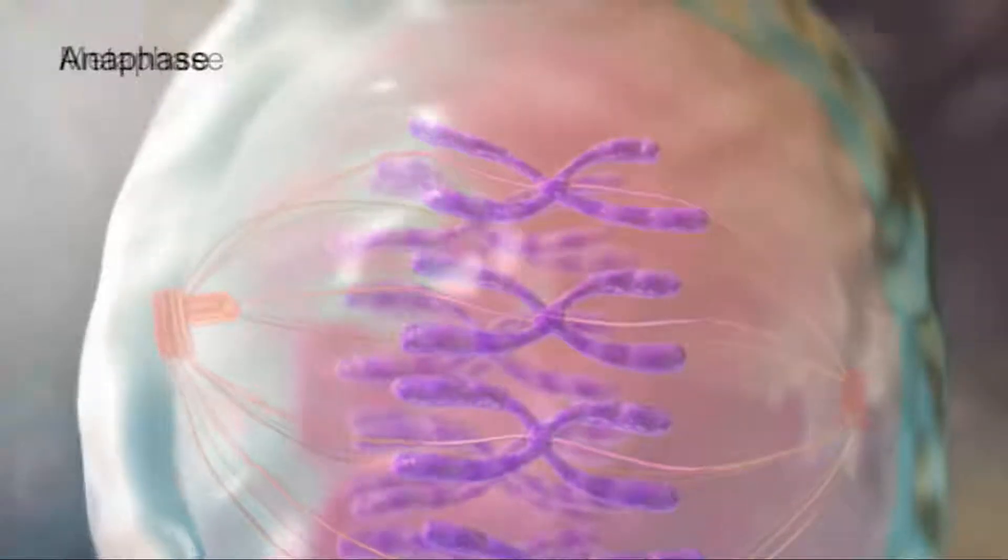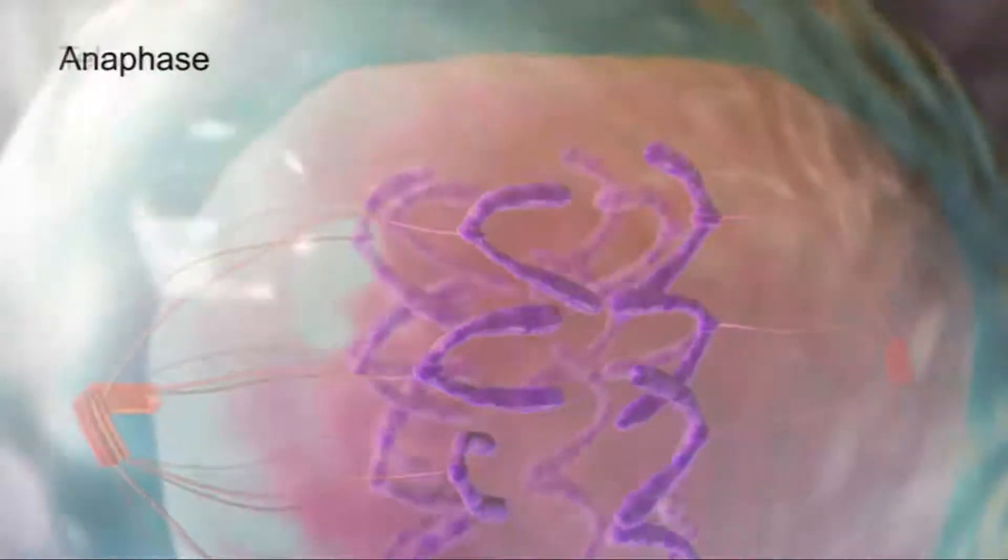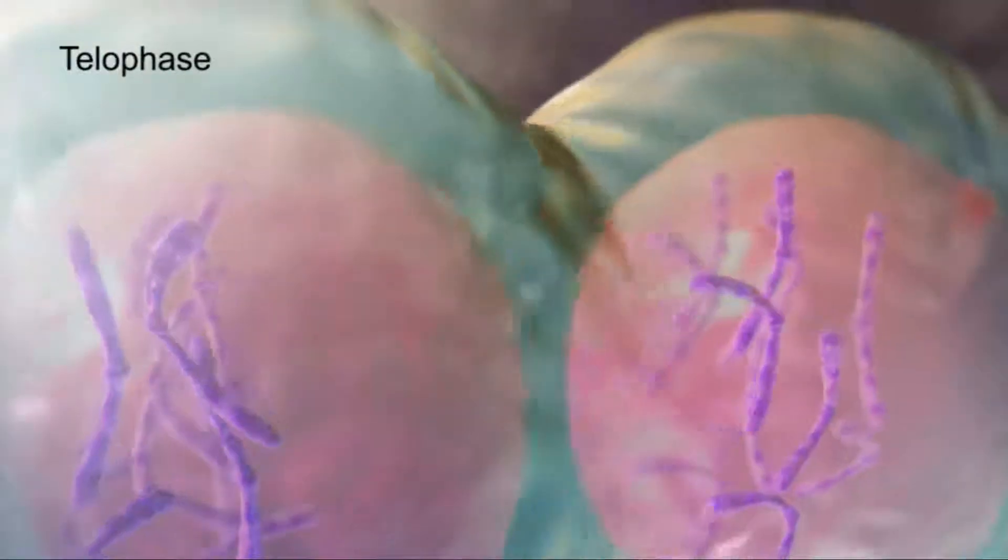The chromatids are then pulled apart. A nuclear membrane forms around the two exact sets of DNA and eventually cleaves.